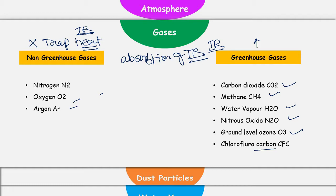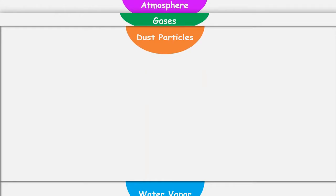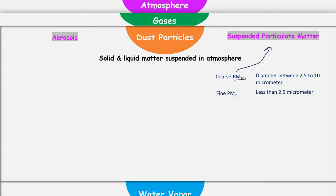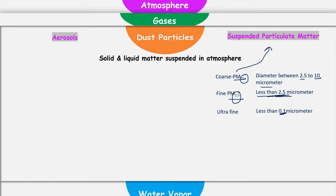Now let's talk about two other components of atmosphere other than gases — that is dust particles and water vapors. Dust particles are the solid or liquid matter which are suspended in atmosphere. These dust particles are also called aerosols and suspended particulate matter. Because of the pollution problem in India, you must have heard about two terms: PM10 and PM2.5. Here PM signifies particulate matter and 10 or 2.5 signifies the size of the dust particle. PM10 means the diameter of the particle is between 2.5 to 10 micrometers, and PM2.5 means its diameter is less than 2.5 micrometers. Apart from these, there are ultrafine particles which have a diameter less than 0.1 micrometers.